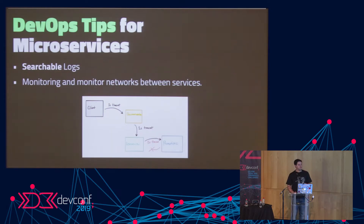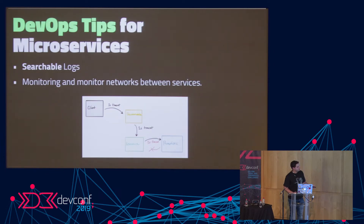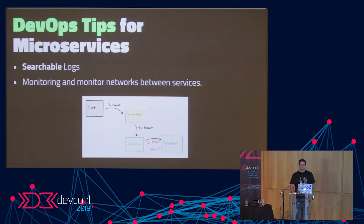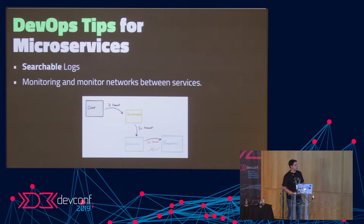The problem is that in a microservices-based architecture, host-level metrics alone are not enough. You could have a client making a call that triggers another HTTP request which then fails — and all your host metrics might report they're fine. You also need to monitor the networks between your services and have alerts for when one service can't communicate to another.